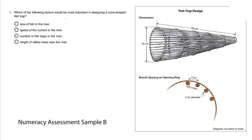Which of the following factors would be most important in designing a cone-shaped fish trap? In this numeracy assessment sample B problem, this is a traditional cone-shaped fish trap. The idea is that fish go through the trap.